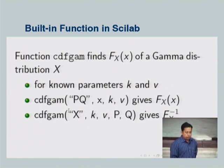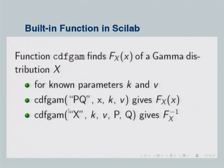Before going to the example, let us look at the Scilab functions. Just like cdfnor for the normal, for gamma we have cdfgam. The format is: cdfgam, within quotes 'PQ', the value at which you are evaluating the CDF, the shape parameter K, and the scale parameter V. For the inverse, replace 'PQ' with 'X' and supply the shape parameter, scale parameter, CDF p, and q = 1 − p.